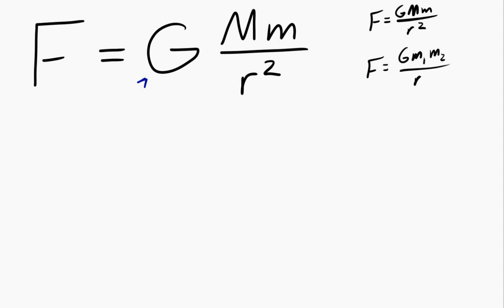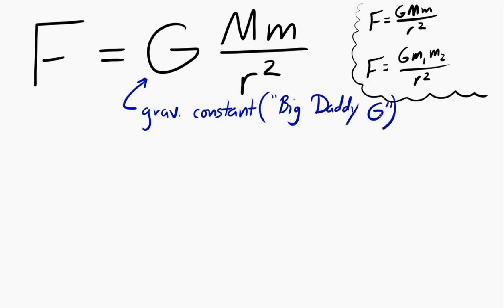In each equation, capital G is known as the gravitational constant. When I was learning physics, my physics teacher called it Big Daddy G. And that's because it's a universal constant. It's the same constant everywhere in the universe. It's a weird number. It's 6.67 times 10 to the negative 11 newton meters squared per kilogram squared, which is a mouthful. But the benefit is you never have to change it.